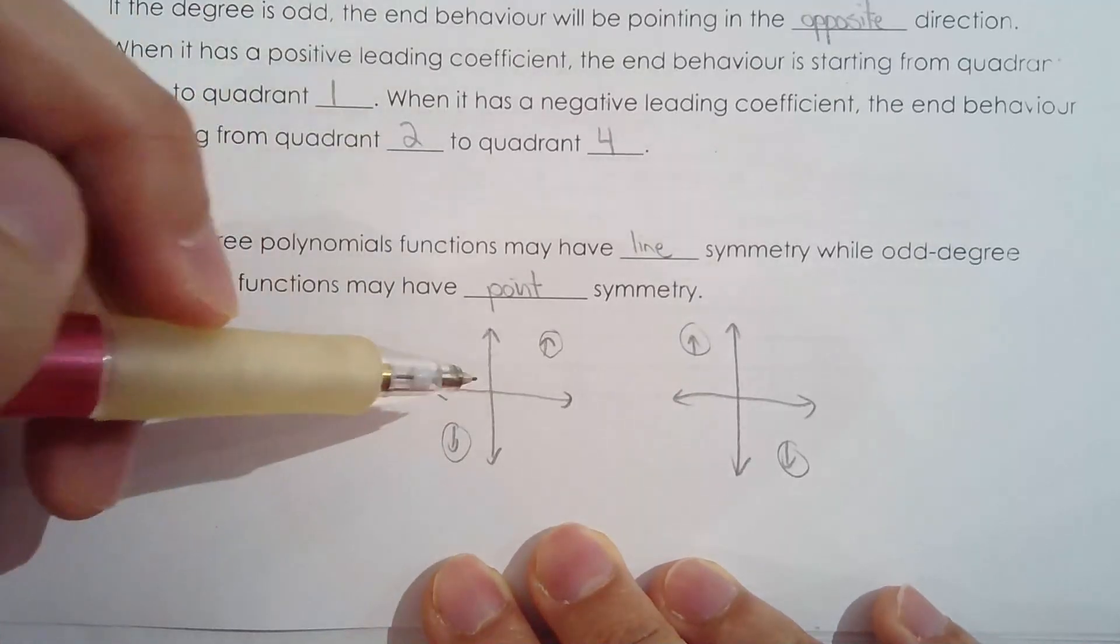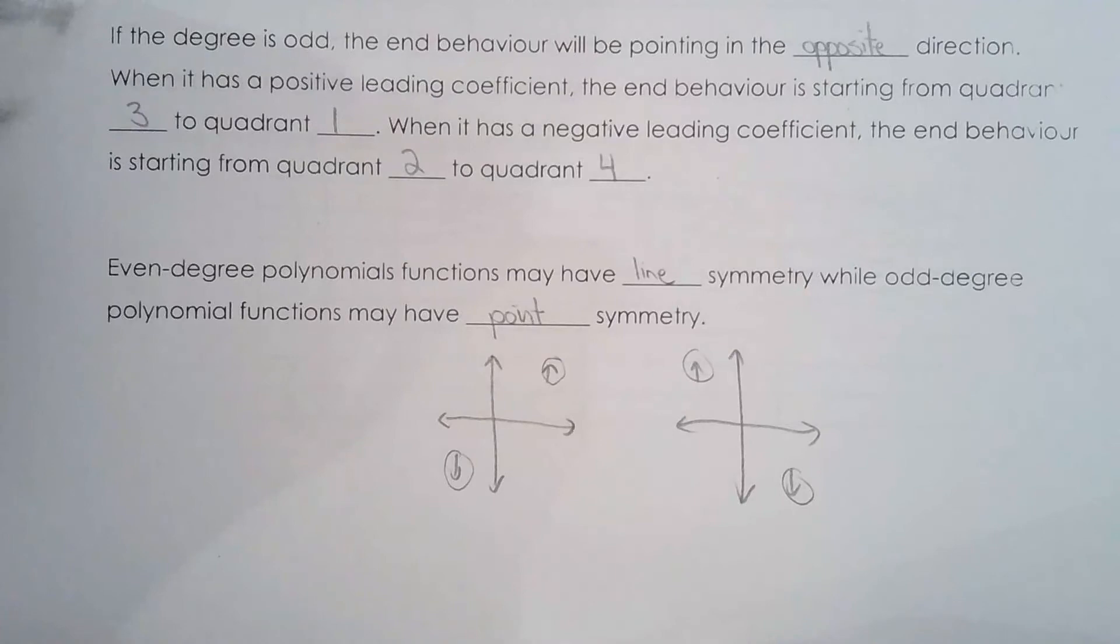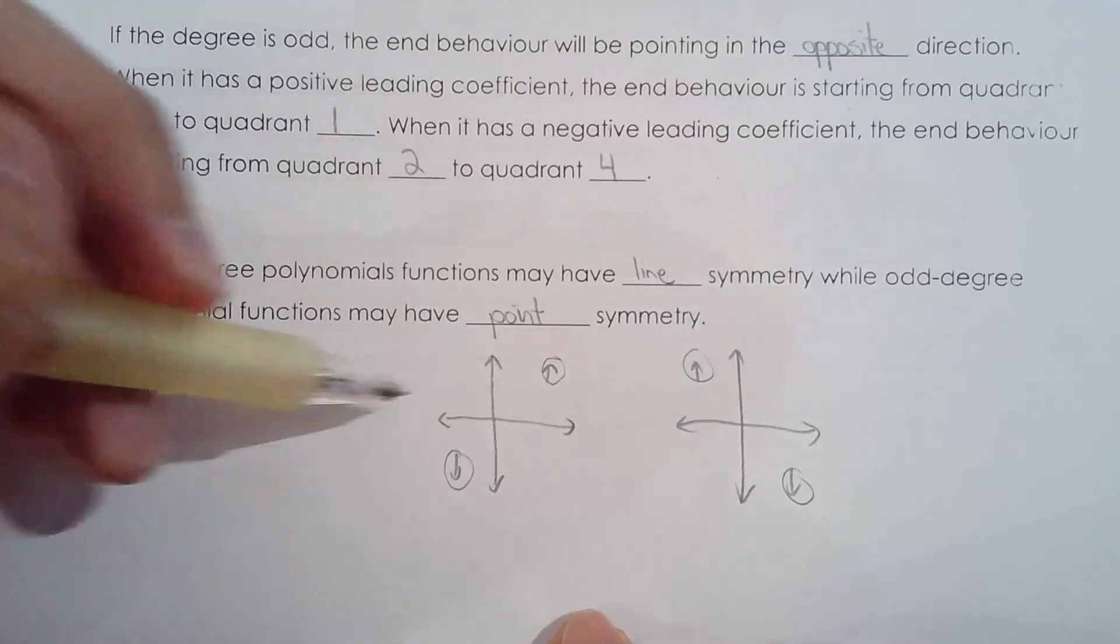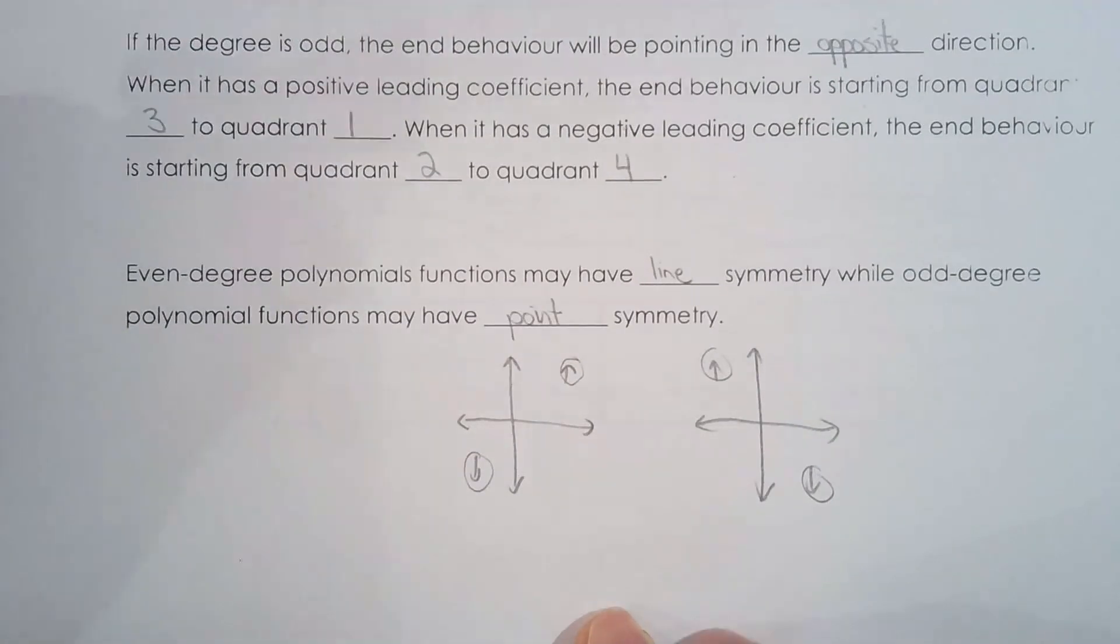But I can definitely rule out line symmetry. And the same could be said if I had an even degree polynomial. If you draw in the end behavior, you can definitely rule out point symmetry for that function or for that graph.